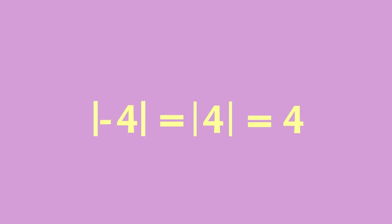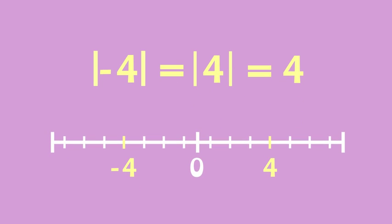Absolute value is always a positive number, because it's the distance from the other number, in this case zero, no matter the direction.